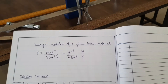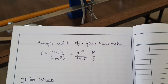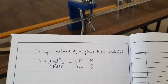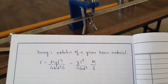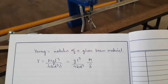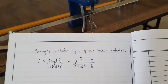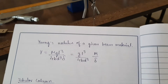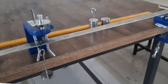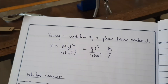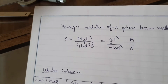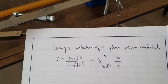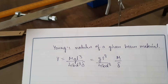Here is the formula to calculate Young's modulus of a given beam material: Y equals mgL³ divided by 4bd³δ. We can also write this as Y equals gL³ divided by 4bd³ multiplied by M over δ. Here, M is the load suspended on the beam, g is the acceleration due to gravity, L is the length of the beam, b is the breadth, d is the thickness, and δ is the deflection when we apply or remove the load.